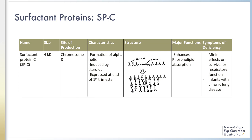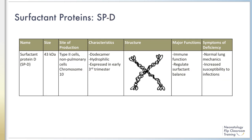However, an autosomal dominant form of surfactant protein C deficiency causes chronic interstitial lung disease in humans and can present in infancy. Surfactant protein D is a dodecamer — consisting of 12 proteins in a complex — and is hydrophilic in nature. It is the largest surfactant protein at 43 kilodaltons.